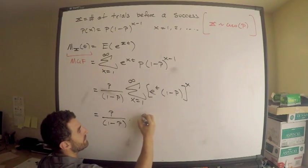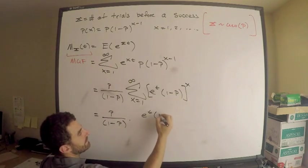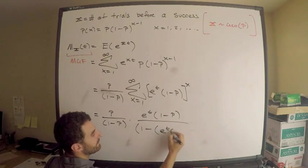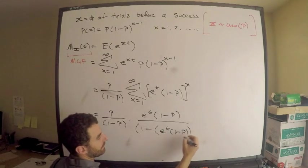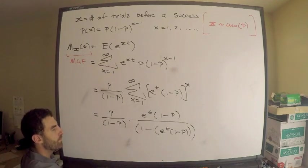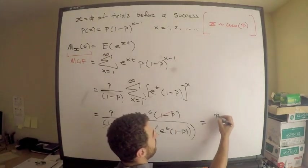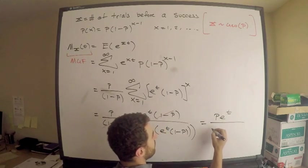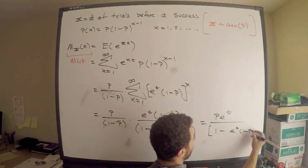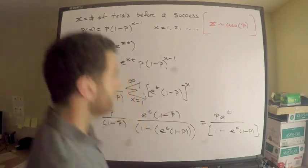A geometric sum converges to the first term divided by 1 minus the common ratio. The first term is found by plugging in x equals 1: e to the t times 1 minus p. Divided by 1 minus the common ratio, which is the same thing: e to the t times 1 minus p. The 1 minus p cancels, so that looks nice.